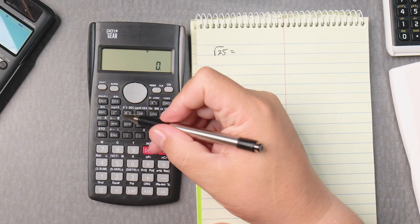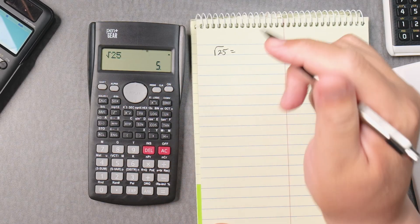So we press the square root button, we type in 25, we press equals, gives you 5.